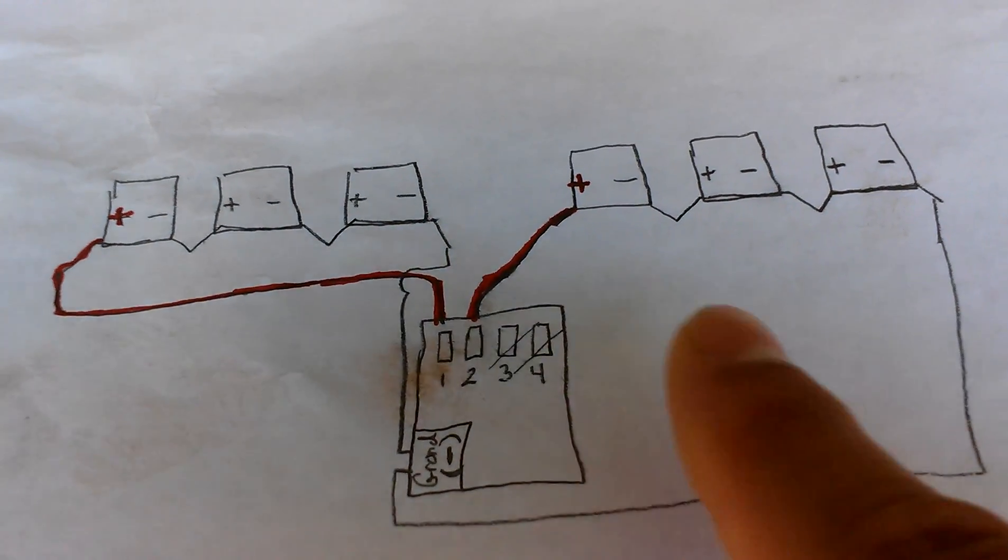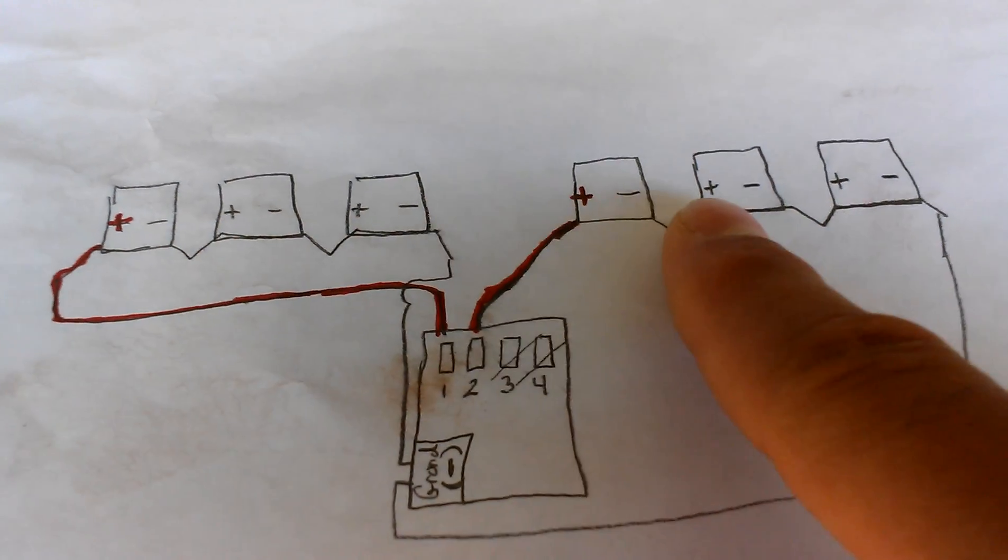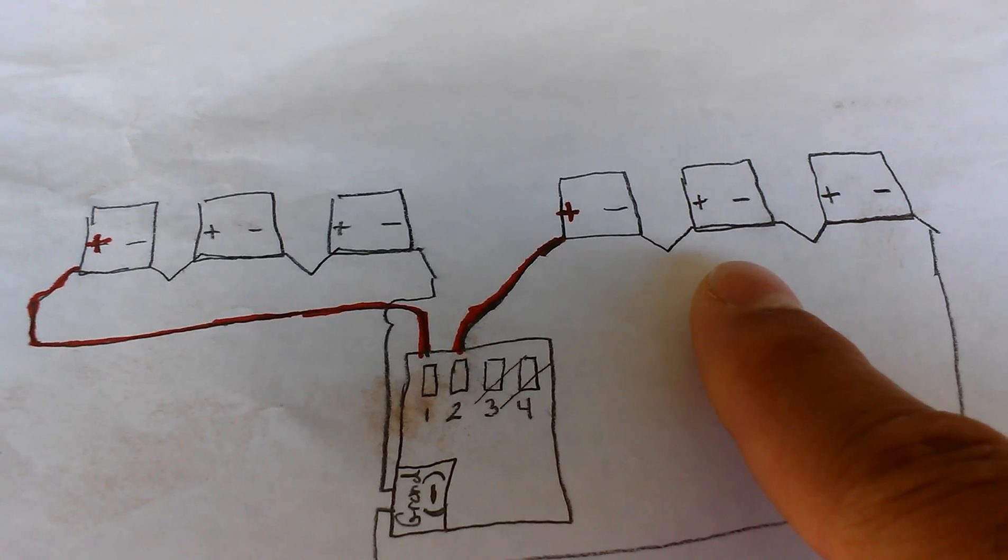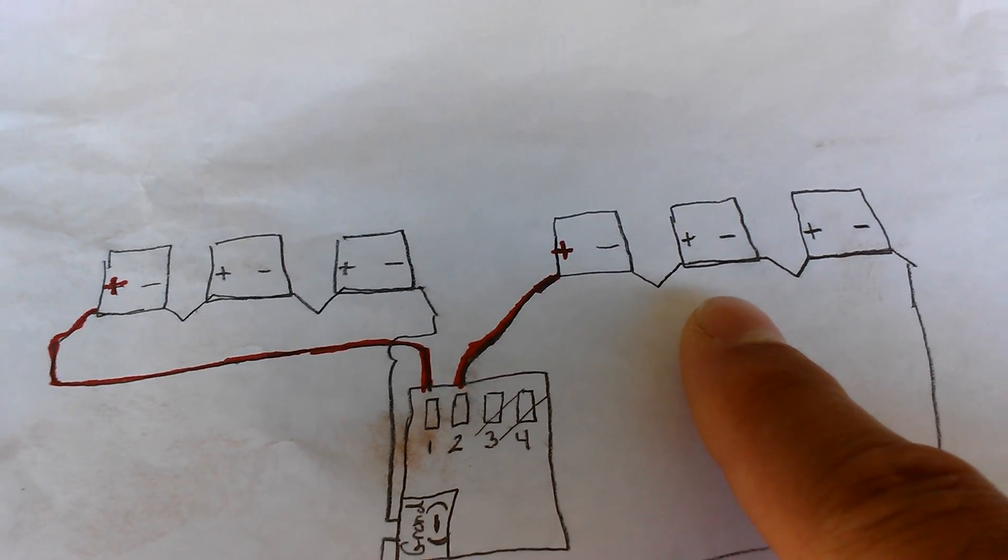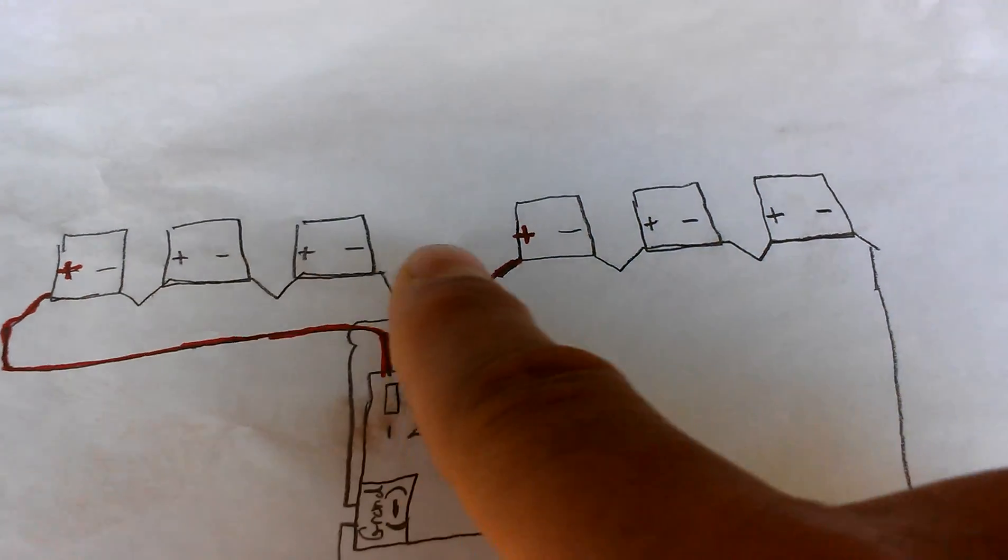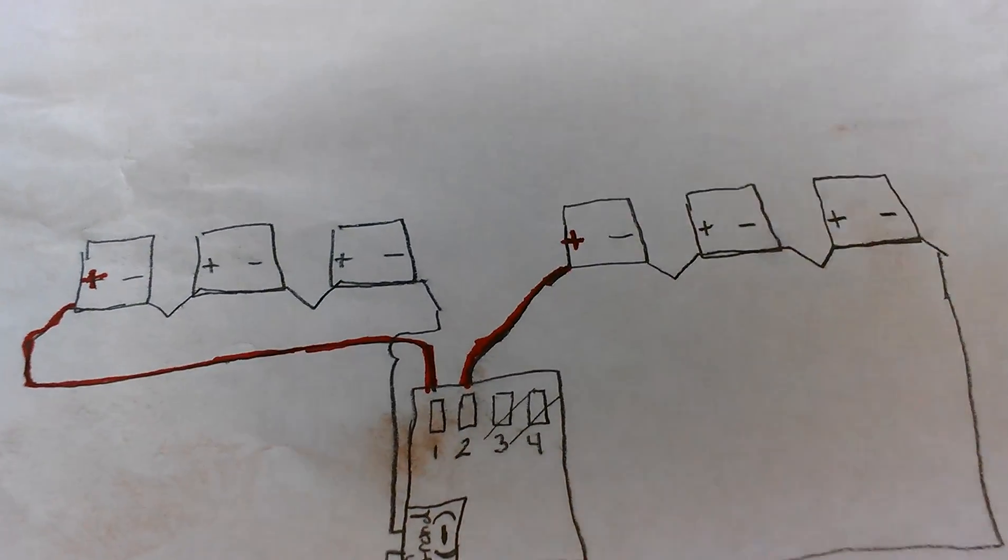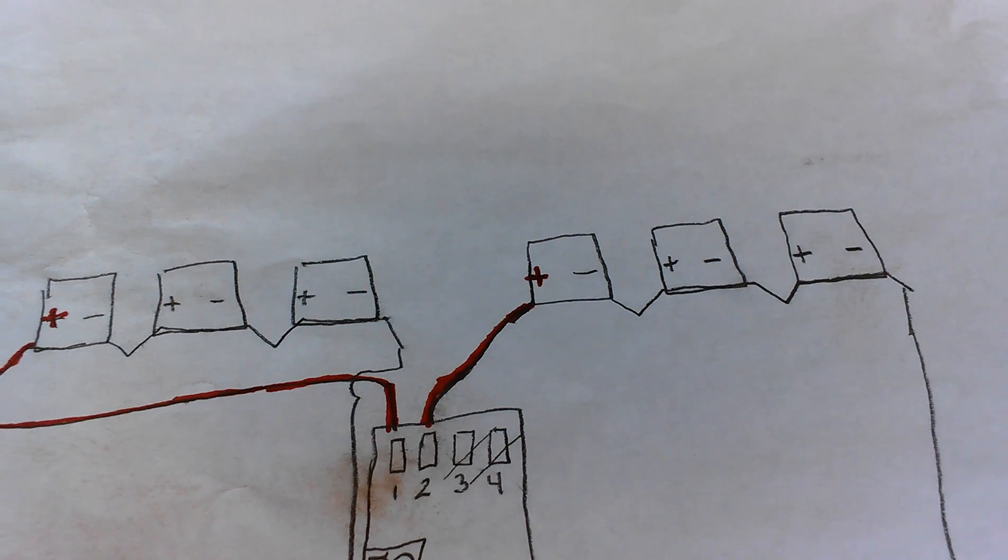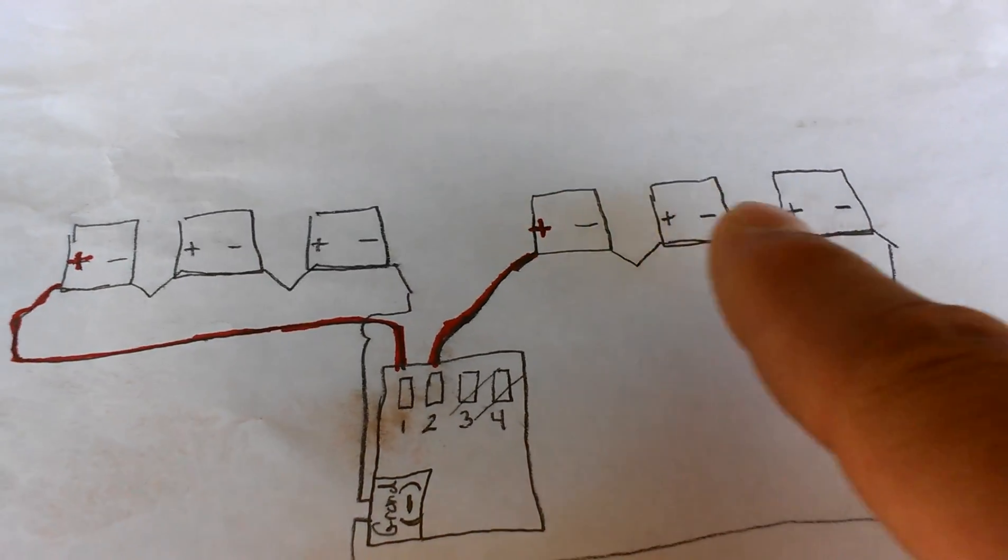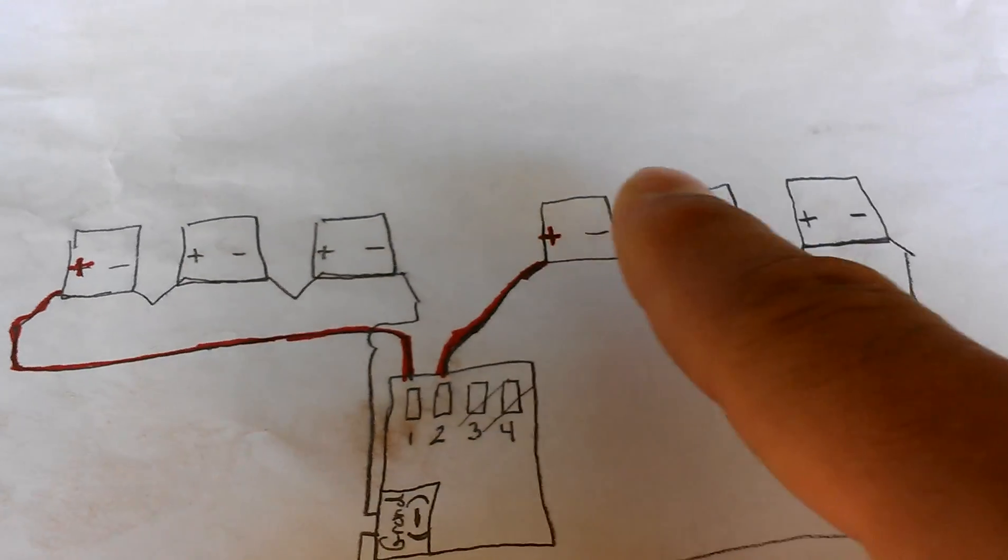My charge controller needs at least 65 volts to kick on. These three - I think it's 37.6 volts for each panel - so my open voltage will be 112 volts which will be a sweet spot. My operating voltage will be 90.9.